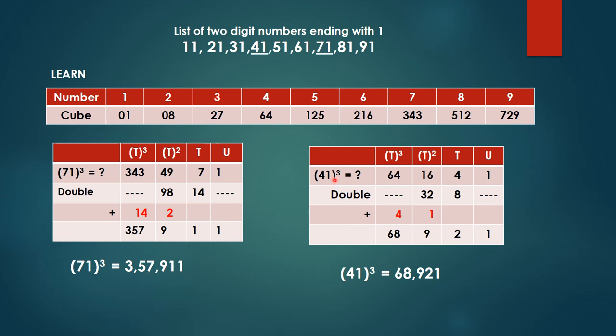Similarly 41 cube equals, write your original number over here, tens place and units place. Then consider, ignore this units place number, consider this tens place number, that is 4. Square of 4 is 16, cube of 4 is 64. Now ignore the first column and last column. Multiply these two numbers by 2 or simply double the number. Double of 4 is 8, double of 16 is 32. Now add them all. 1 plus nothing is 1. 8 plus 4 is 12, so 1 carried over and 2. So 16 plus 32 plus 1 equals 49, so 9 is here and 4 is carried over. 64 plus 4 is 68. Therefore cube of 41 or 41 cubed equals 68921.